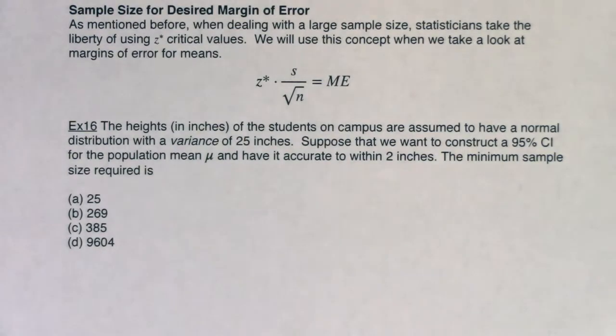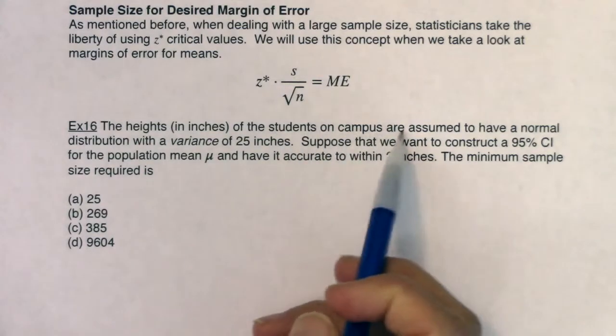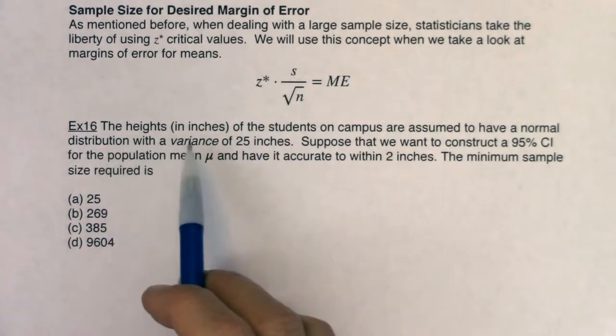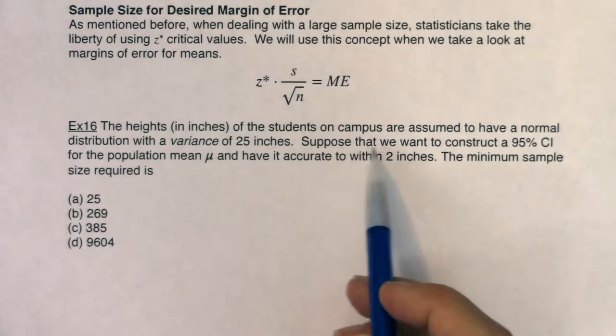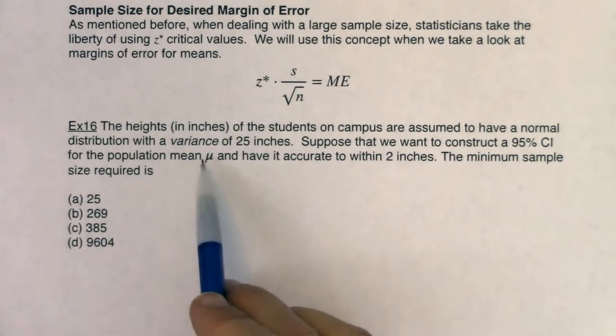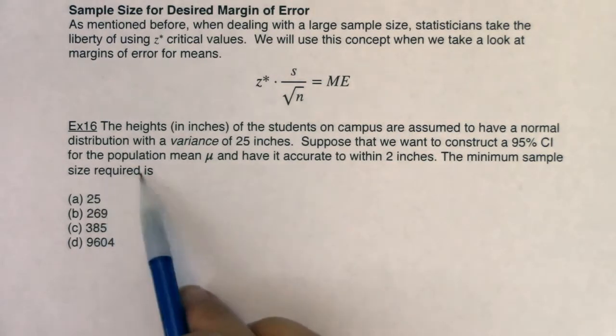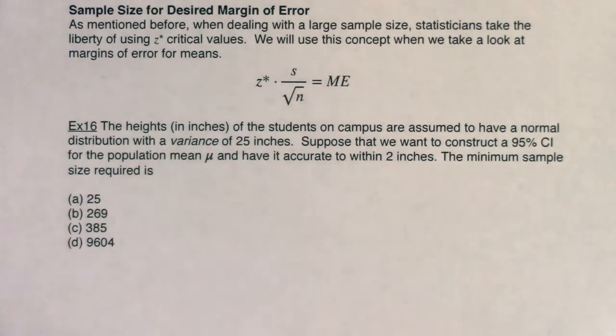All right. So as I read through this, listen for what land are we in. So the heights in inches of students on campus are assumed to have a normal distribution with a variance of 25 inches. Suppose that we want to construct a 95% confidence interval for the population mean mu and have it accurate to within 2 inches. The minimum sample size required is, all right, so let's see.